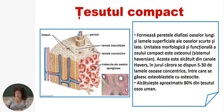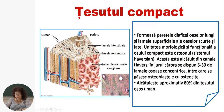Țesutul compact formează peretele diafizei oaselor lungi și lamelele superficiale ale oaselor scurte și late. Unitatea morfologică și funcțională a țesutului compact este osteonul sau sistemul Haversian. Osteonul este alcătuit din canale Havers, în interiorul cărora se află vasele sanguine. În jurul acestor canale se dispun 5-30 de lamele concentrice osoase, între care se găsesc osteoblastele cu osteocitele. Țesutul compact alcătuiește aproximativ 80% din țesutul osos uman.